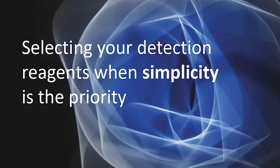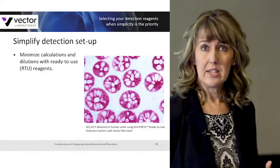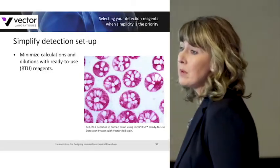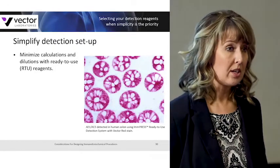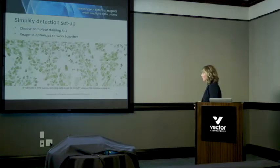Next, we'll discuss selecting detection reagents when simplicity is your priority. When you want a simplistic assay, minimize the handling and number of steps needed to achieve your staining. Avoid unnecessary steps such as endogenous enzyme blocks by choosing alternative enzyme systems. Avoid endogenous avidin-biotin activity by choosing non-biotin polymer reagents. Minimize protein blocking steps by choosing detection reagents with minimal background. You can also simplify setup by choosing ready-to-use reagents, minimizing the calculations and dilutions required. It's also good to choose complete staining kits with all reagents optimized to work together.